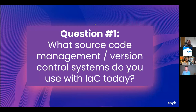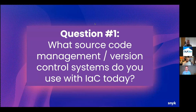Even for a one-person shop, having Git and having that history — knowing what's changed and being able to go backwards and look at what you did in the past — is still a reason to have it in a system like this. Robert makes the point: get your IaC config into source control even if you are working on your own. Can't recommend that enough.